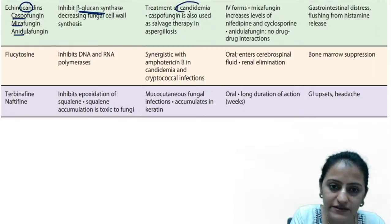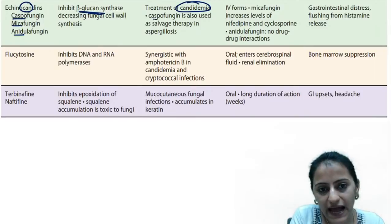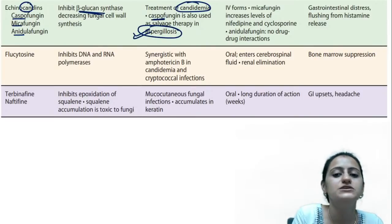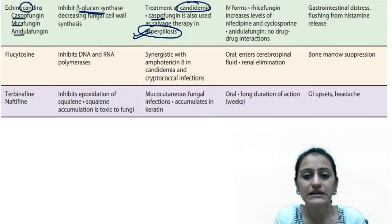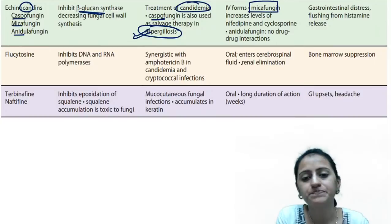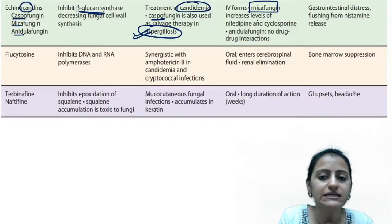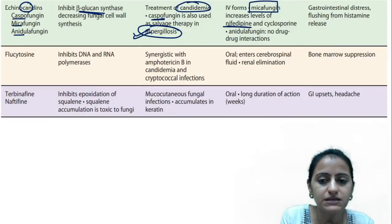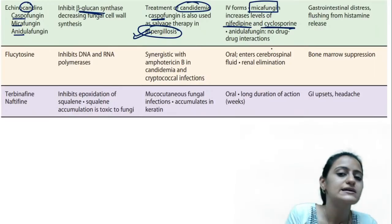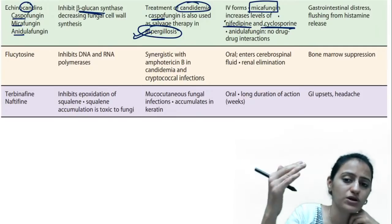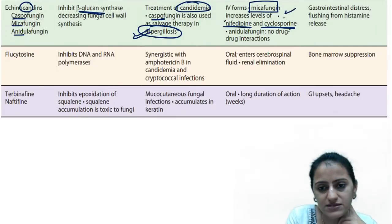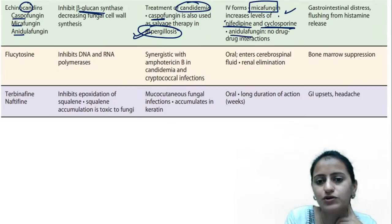Echinocandins — caspofungin, micafungin, anidulafungin — inhibit beta-glucan synthesis, affecting cell wall synthesis. Active against candida. Caspofungin (ASP) is used as salvage therapy in aspergillus. Available in IV forms. Micafungin increases levels of nifedipine and cyclosporin — do not give with these or reduce their dose. Anidulafungin has no drug interactions.